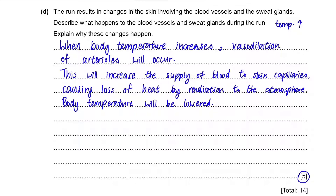For sweat glands: similarly, the increase in body temperature that caused vasodilation will also cause increased blood flow to sweat glands. Sweat glands produce sweat, so there will be increased production of sweat. This will help lower body temperature by the evaporation of sweat.